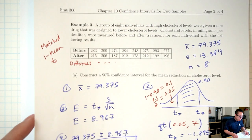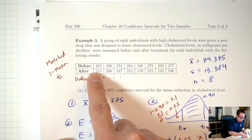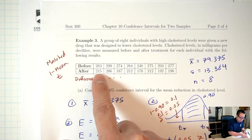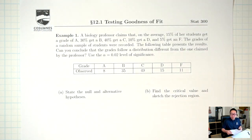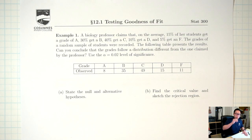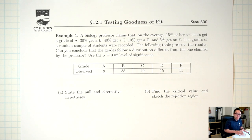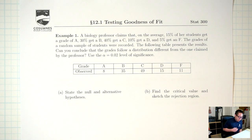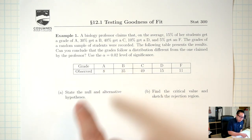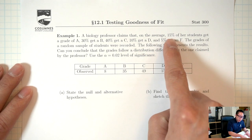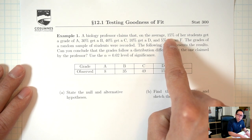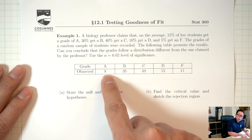Before, these were not counts of how many people are in each category — there were no categories. That's one way to tell the difference between what we're doing today versus previous lectures. Eight people got an A. The professor claimed that 15% should have gotten an A.